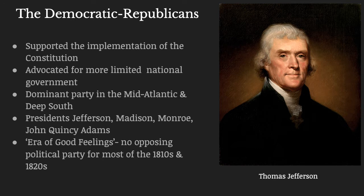The Democratic Republicans were, early on, also Federalists. They believed in the implementation of the Constitution. But whereas the Federalists desired to have a very strong central government, the Democratic Republicans wanted that federal government to be more limited. This was the dominant political party in the Mid-Atlantic and the Deep South — basically everything south of New York City. The Democratic Republicans, prior to them becoming the Democratic Party, were represented by Presidents Thomas Jefferson, James Madison, James Monroe, and John Quincy Adams, who was the son of President John Adams.